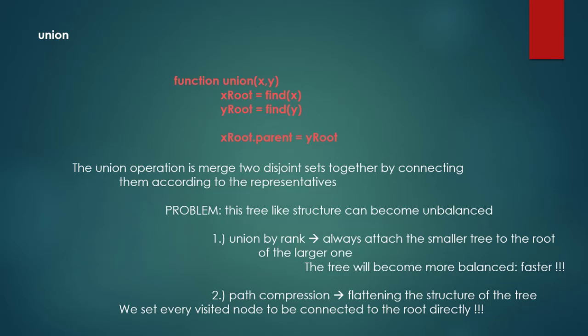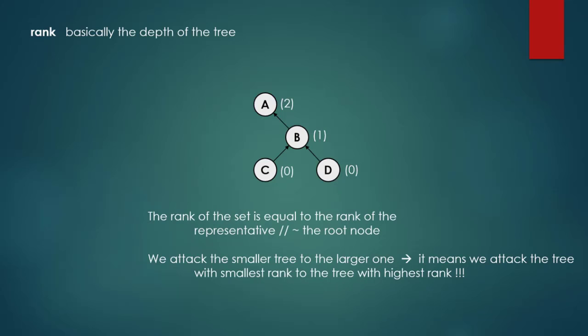With union by rank the tree becomes more balanced, and operations like find become faster. The second option is path compression. We usually use both solutions at the same time: union by rank plus path compression. Path compression flattens the structure of the tree by setting every visited node to be connected to the root node directly, allowing us to achieve asymptotically O(1) constant time for find.